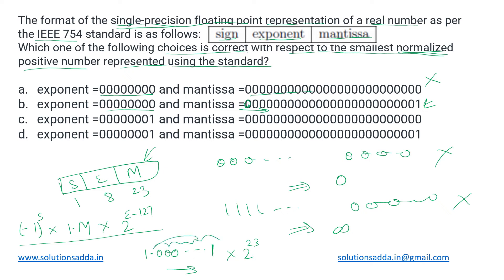The third one is exponent is one, mantissa is all zeros. This seems to be a possible candidate for the answer.